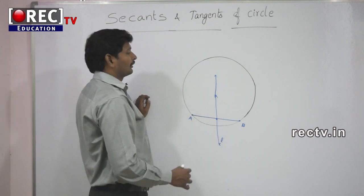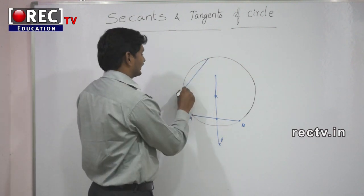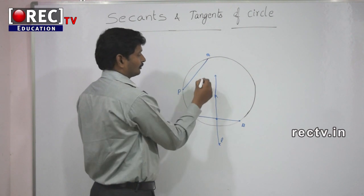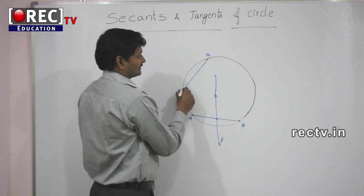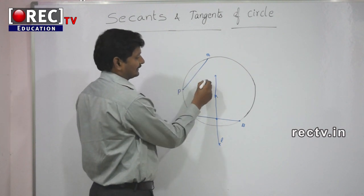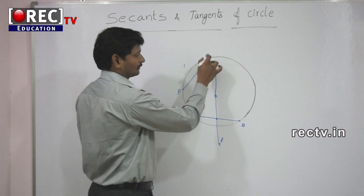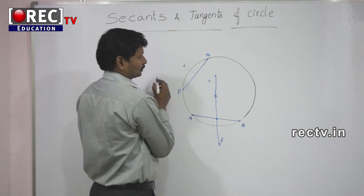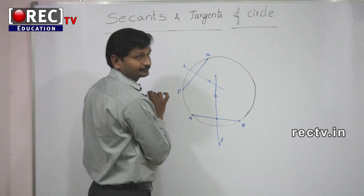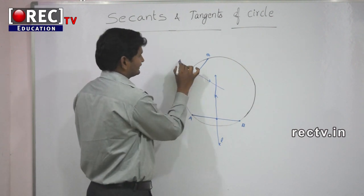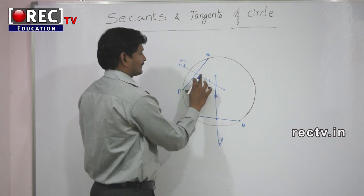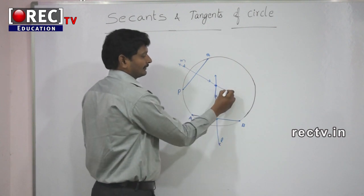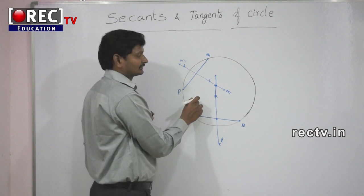Now consider another chord PQ. Take a radius more than half of PQ, take P as center and draw arcs on two sides, then intersect those arcs from Q with the same radius and join the two intersection points. This line M becomes the perpendicular bisector of PQ. The point of intersection of line L and line M is the center of the circle, which we call O.